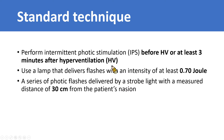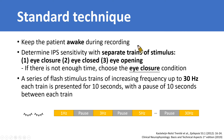To standardize the IPS recording, we should use a lamp with an intensity of at least 0.7 J that delivers a series of flashes by a strobe light 30 cm from the patient's nasion. We should keep the patient awake during IPS recording, because IPS during sleep does provoke photophotoparoxysmal responses only in REM sleep, which is usually not obtainable during a routine EEG recording.